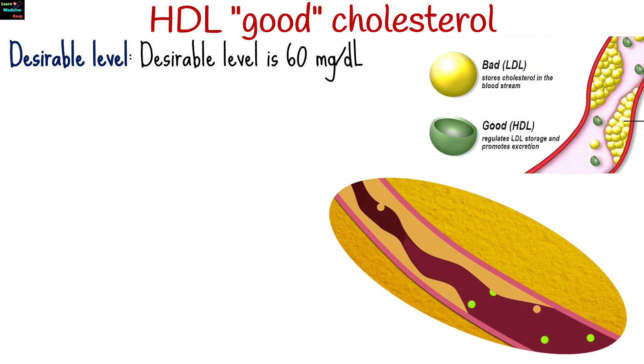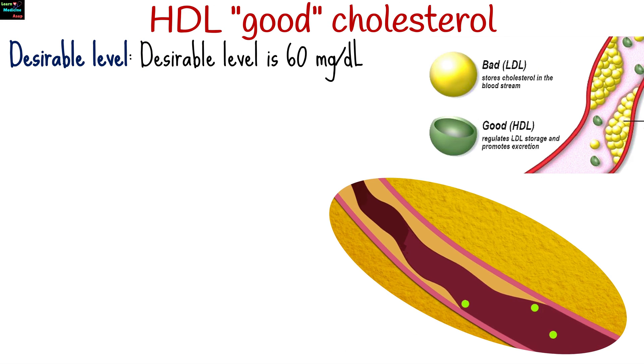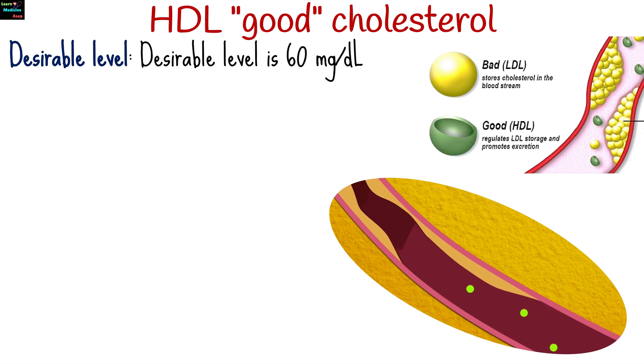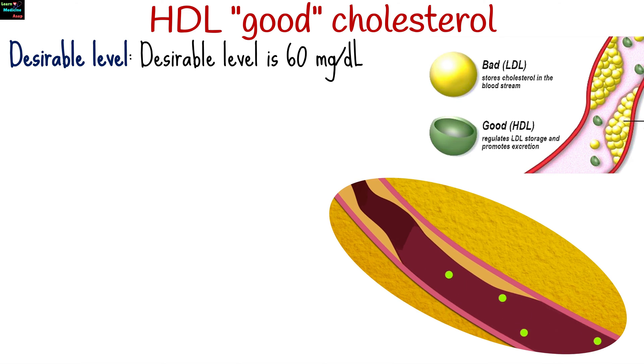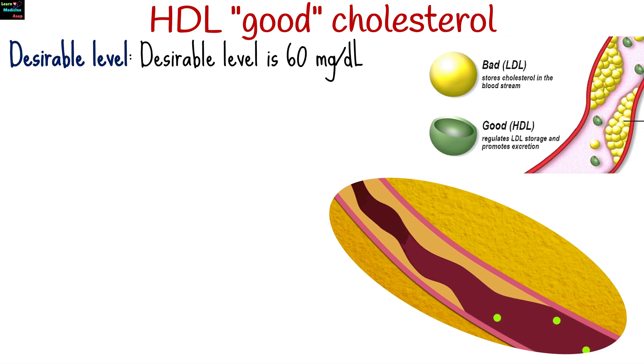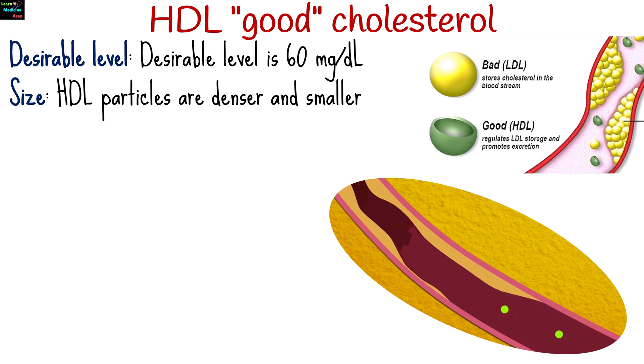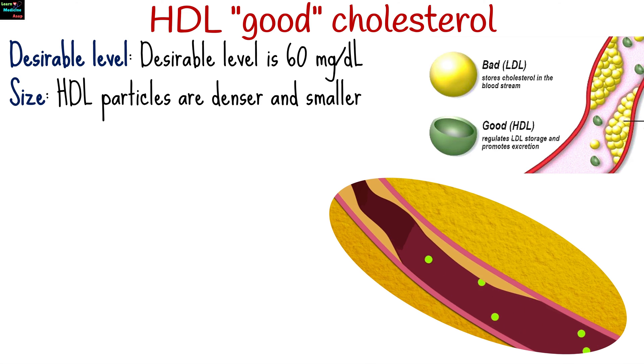High-density lipoprotein is often referred to as good cholesterol. The desirable level is 60 mg per deciliter and above. HDL particles are denser and smaller.